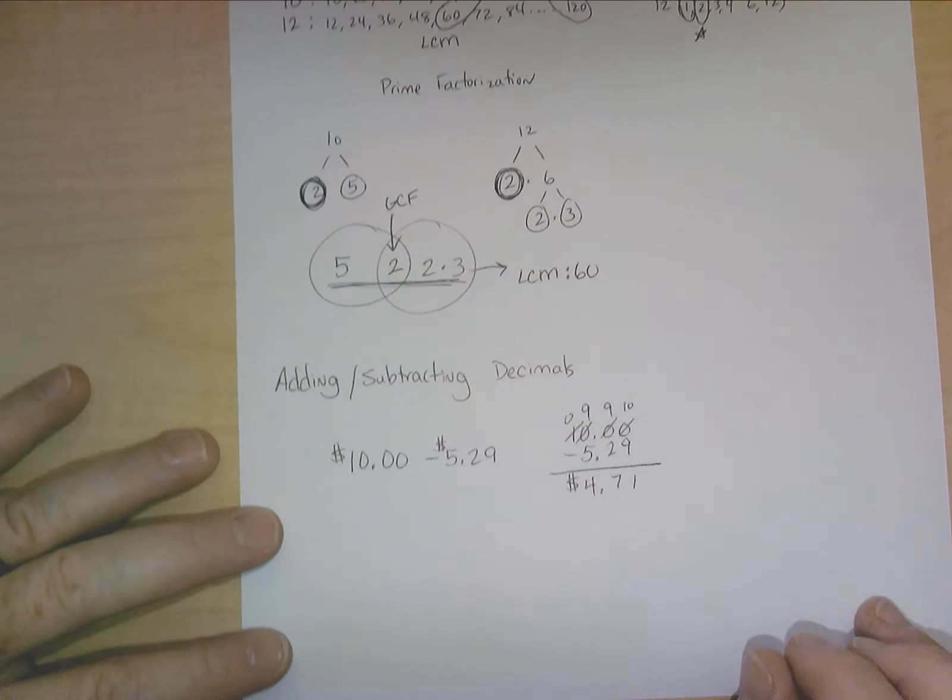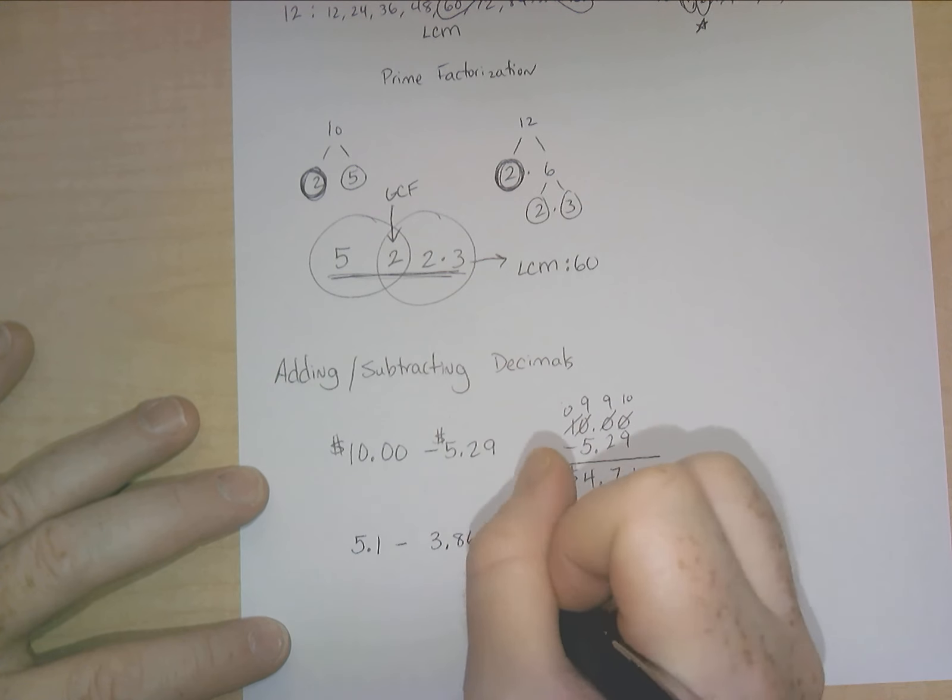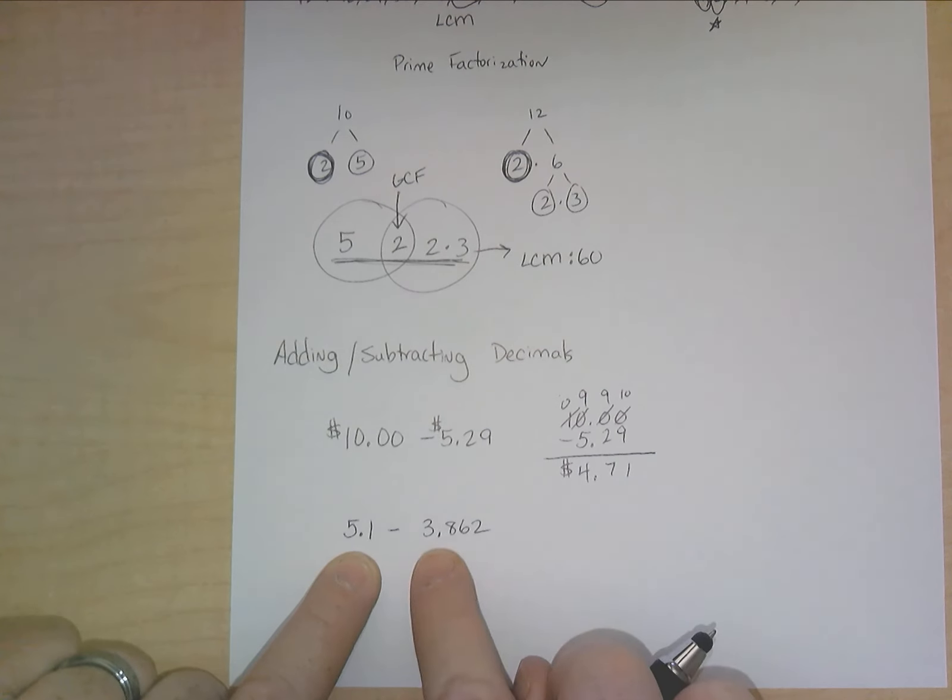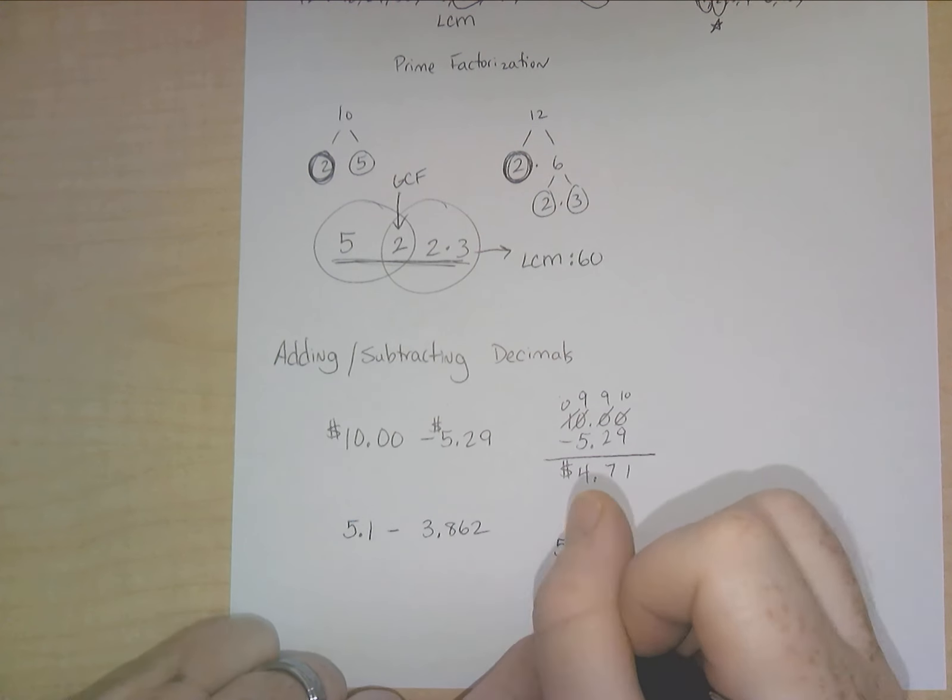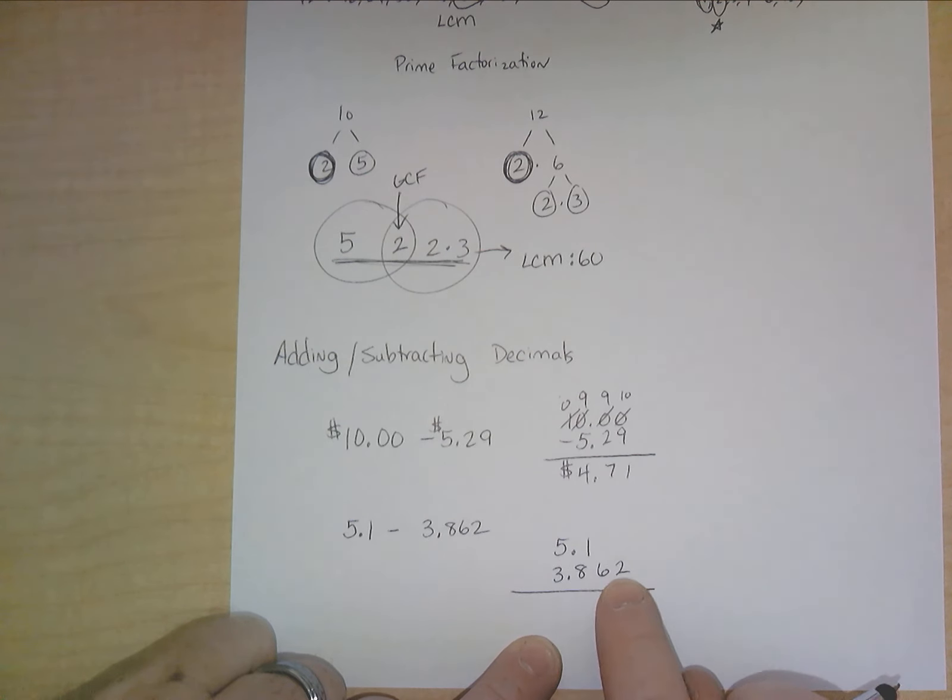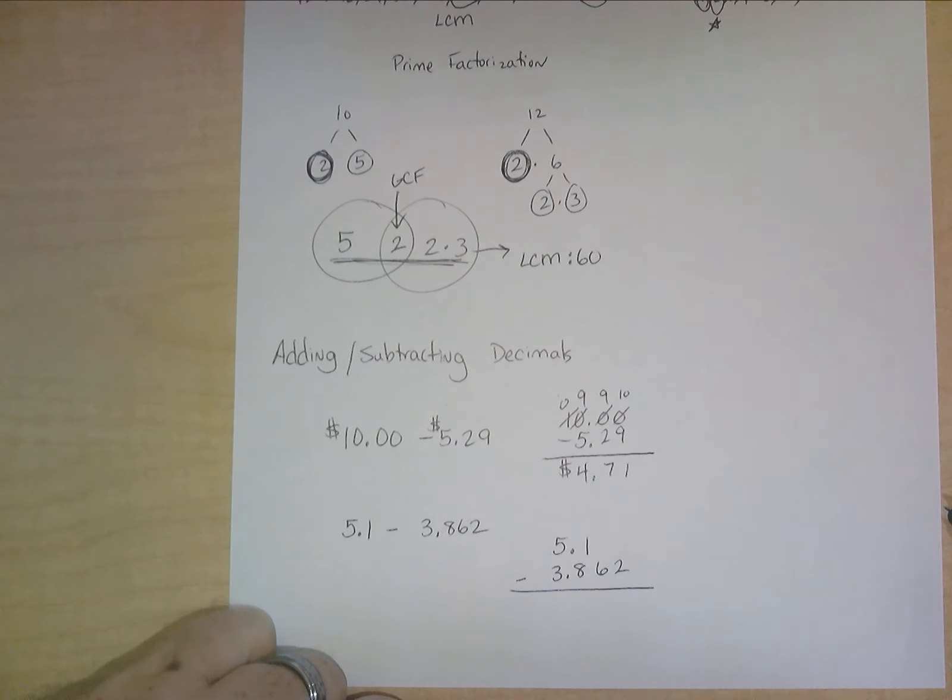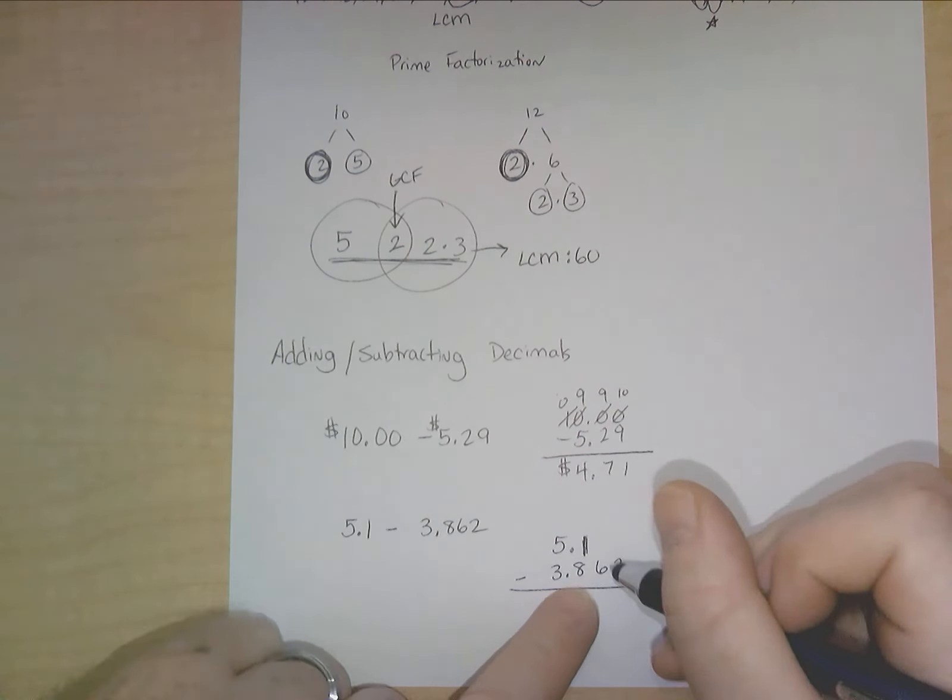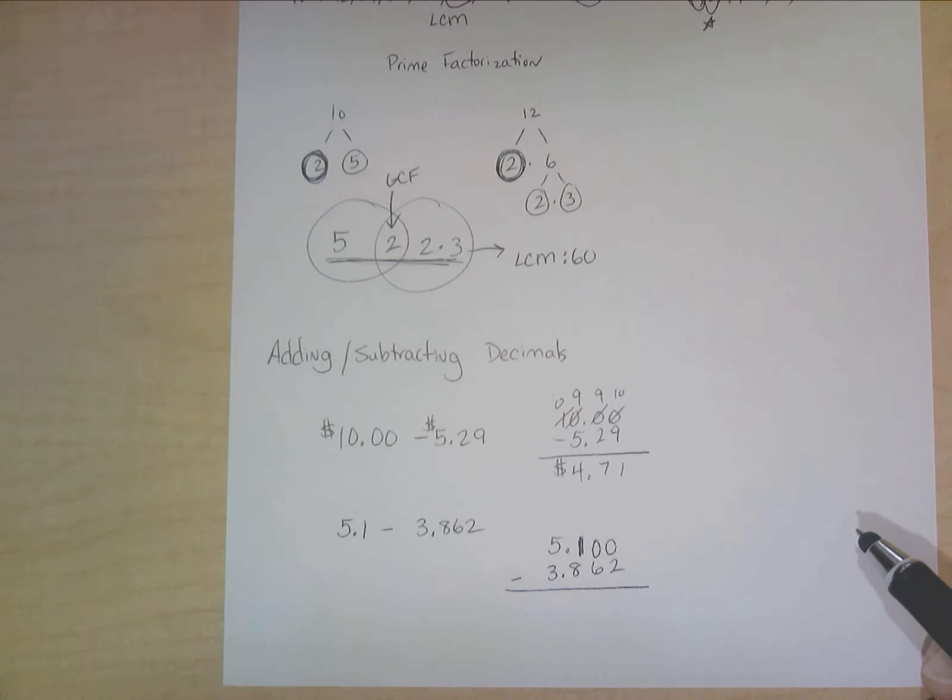But let's say you're subtracting something, and it's not quite clear. Like, let's say we've got 5.1 minus 3.862. In this situation, you still want to do the same thing. You want to line up the decimals, 5.1, 3.8, and then put your 6 and 2 here. I'm moving it over a little bit to the right, being a little bit intentional just so that you can see that the 6 and 2 are going to fall under basically nothing. So this 8 is under the 1. So since there's nothing here, you're just putting something in its place, the whole place value.